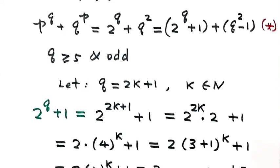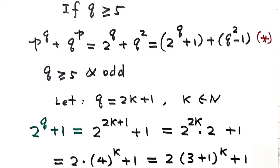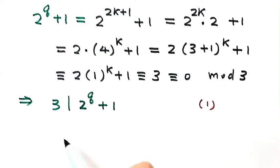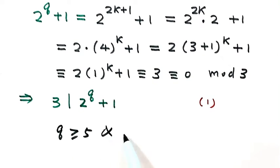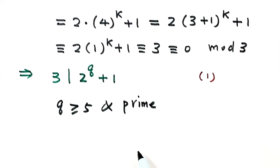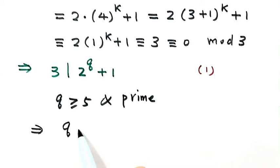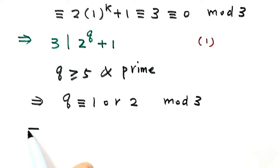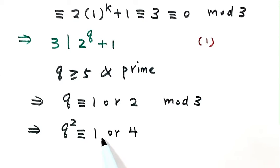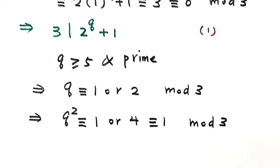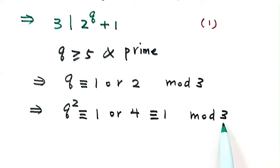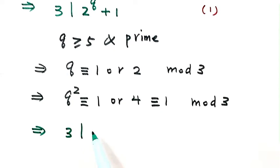Now look at q² − 1. Because q is a prime greater than or equal to 5, q is not divisible by 3, so q has remainder 1 or 2 when divided by 3. In either case, q² has remainder 1 when divided by 3 (since 1² = 1 and 2² = 4 both leave remainder 1). Therefore q² − 1 is divisible by 3. Label this Result 2.